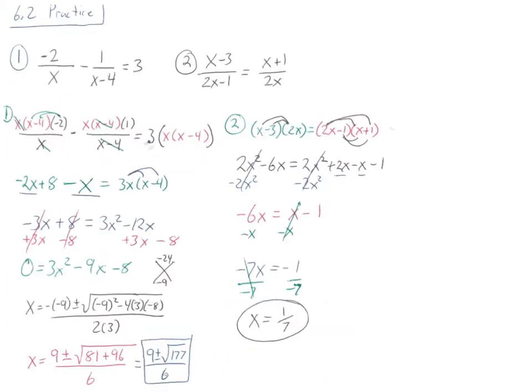In order to do 6.2 benchmark, you have two equations that are rational. One of them is a proportion. One of them you multiply everything by the denominators. You can tell this is a proportion because you have a fraction equal to a fraction. In this one, you're going to take each denominator and multiply it by each numerator.